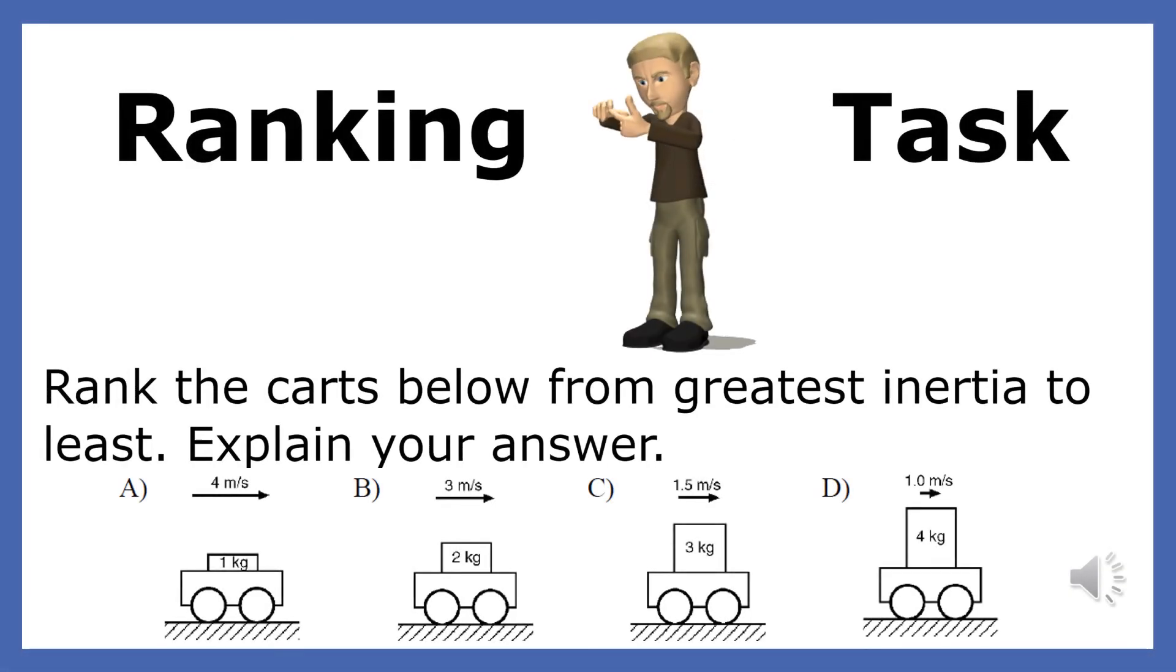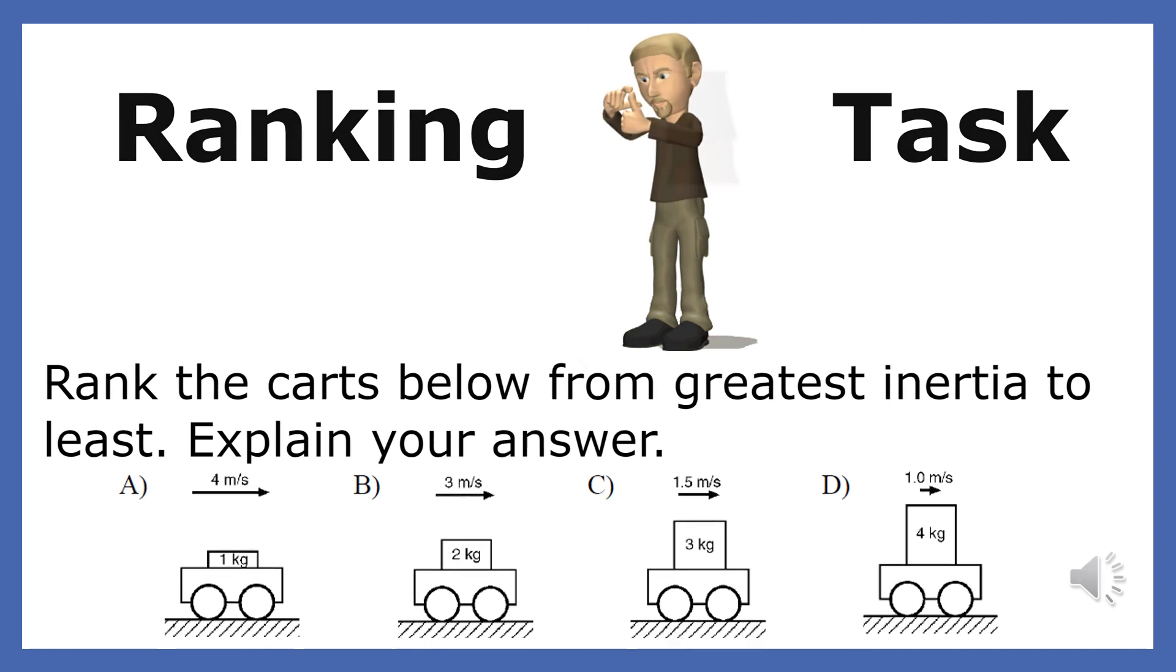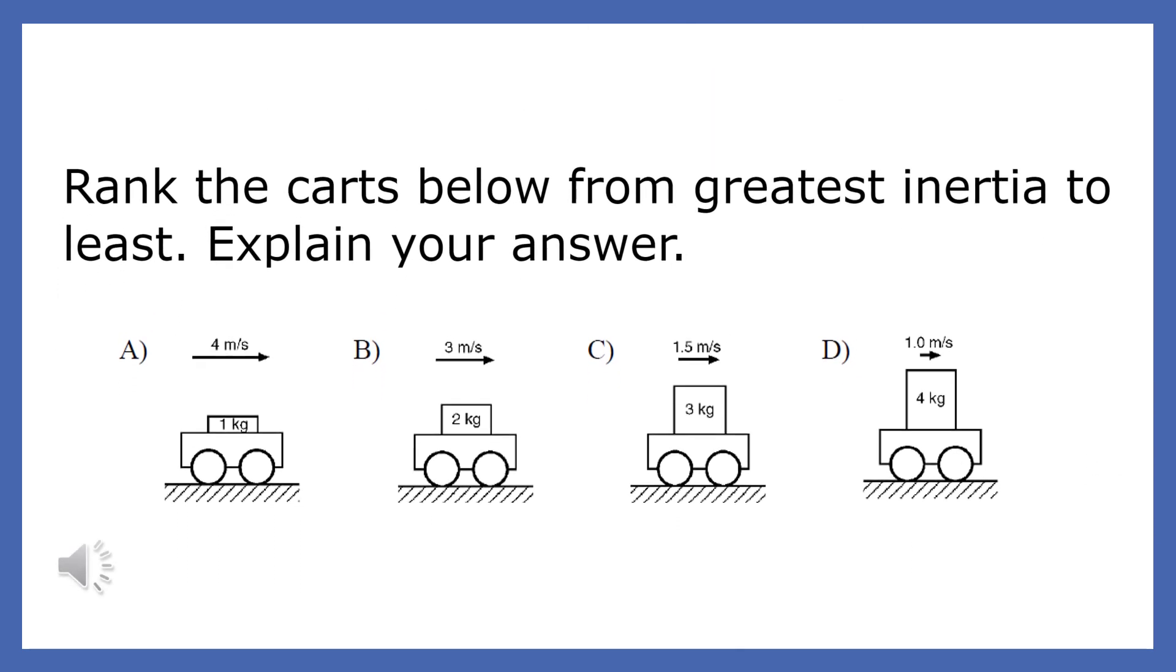Rank the carts below from greatest inertia to least. Explain your answer. All you need to look at when you rank the inertia of these carts is one thing. Ignore everything else you see in these choices except mass. The cart whose motion would be the most difficult to change would be choice D. Choice D has the most inertia because it has the most mass. The cart with the least inertia, of course, would be choice A because it has the least mass.